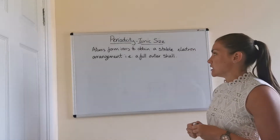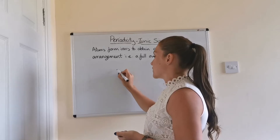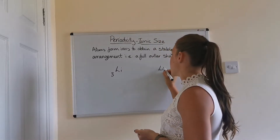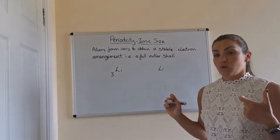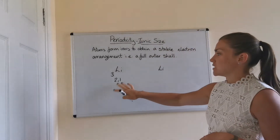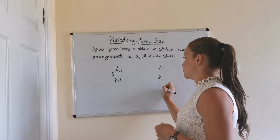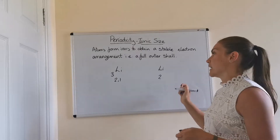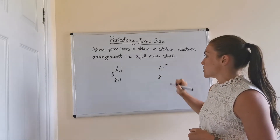If we take lithium to start off with, and compare the size of a lithium atom with a lithium ion — lithium's electron arrangement is 2,1. For it to obtain a stable electron arrangement, it's going to have to lose an electron, so it becomes the electron arrangement 2, which is the same as helium, the noble gas. Because it's lost one electron, it then obtains a positive charge.